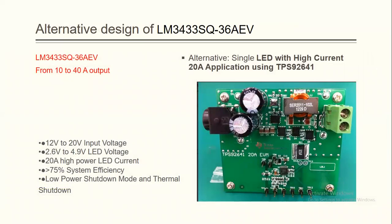So, if you want to get a 30 ampere buck converter in order to control the LED, you can go to Texas Instruments and get this model TPS92641.